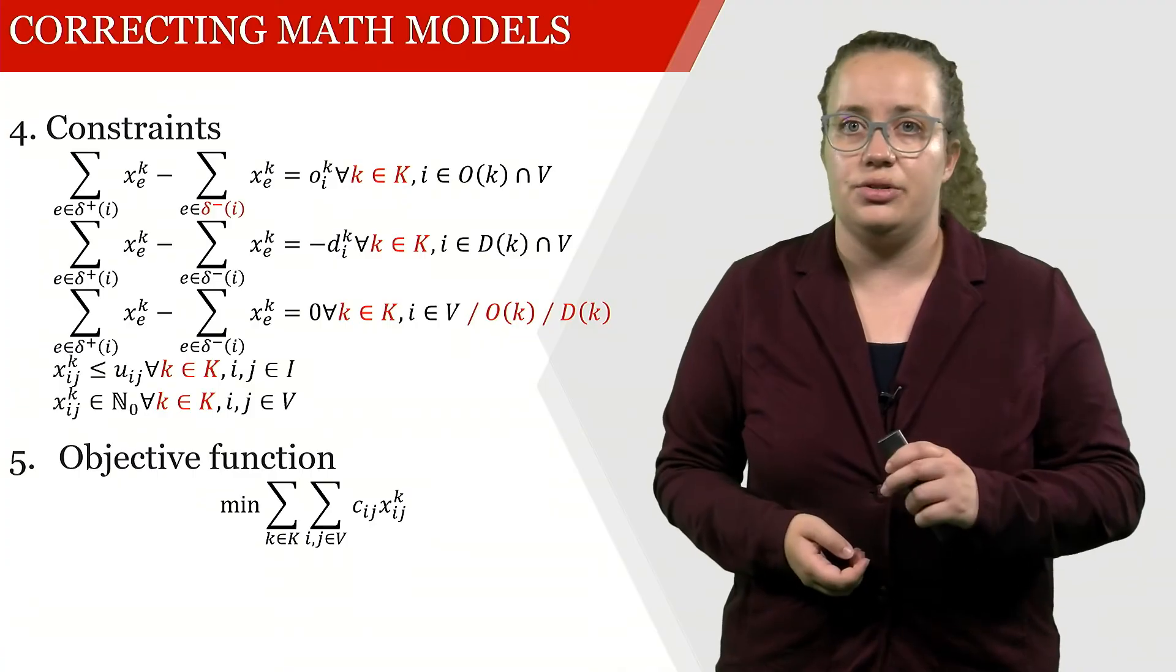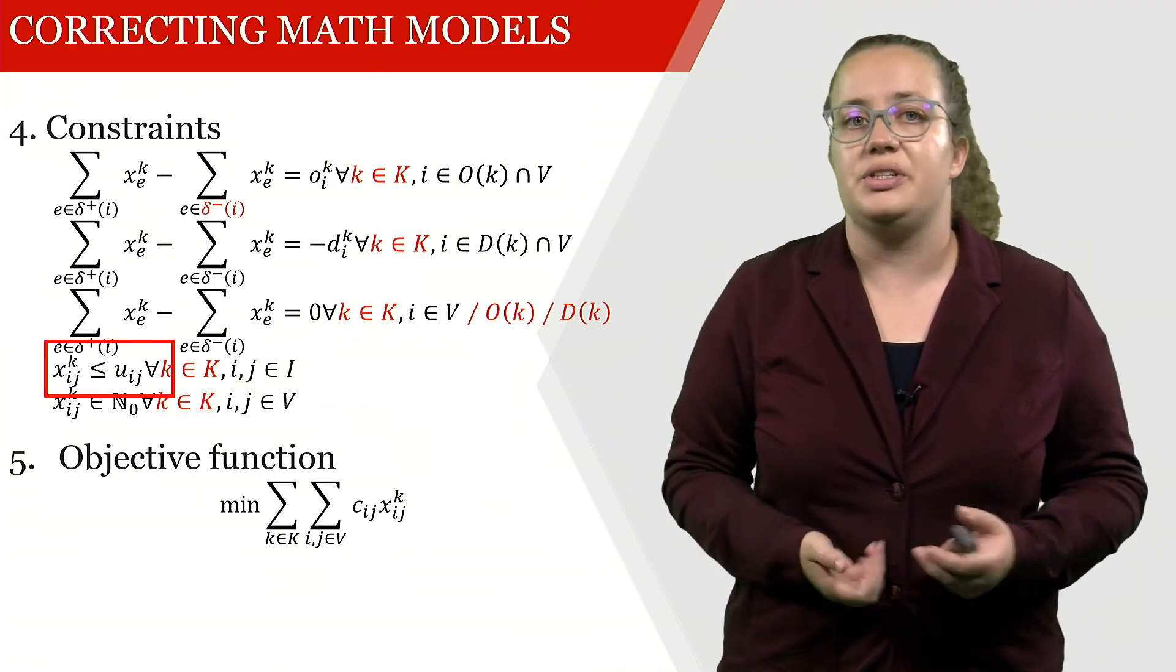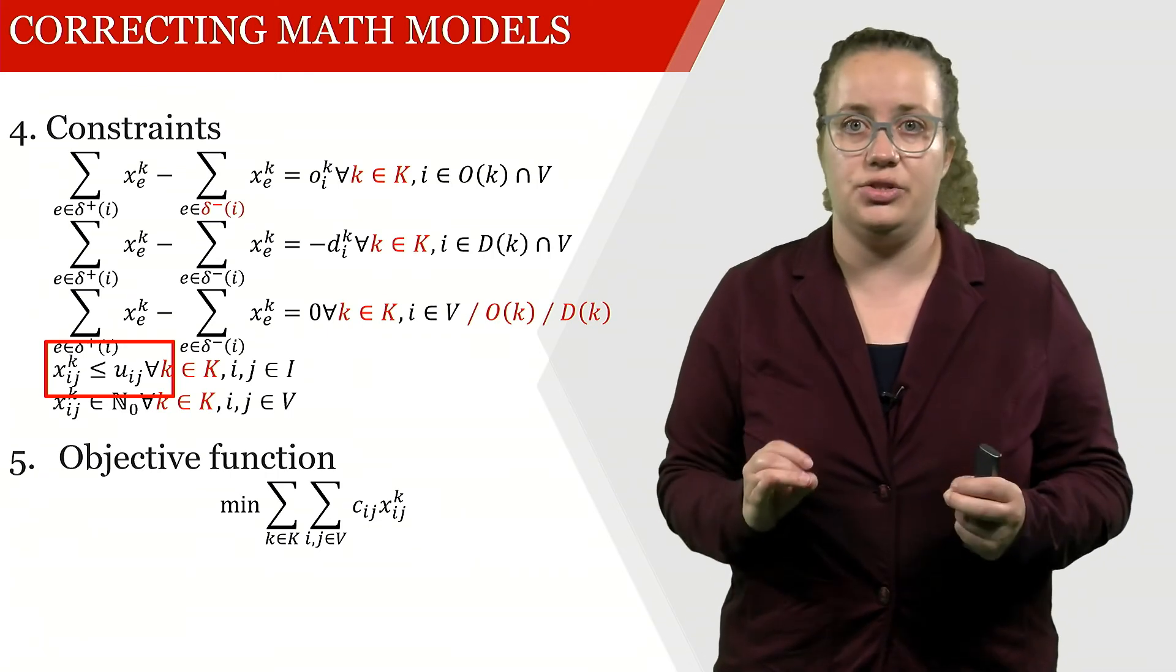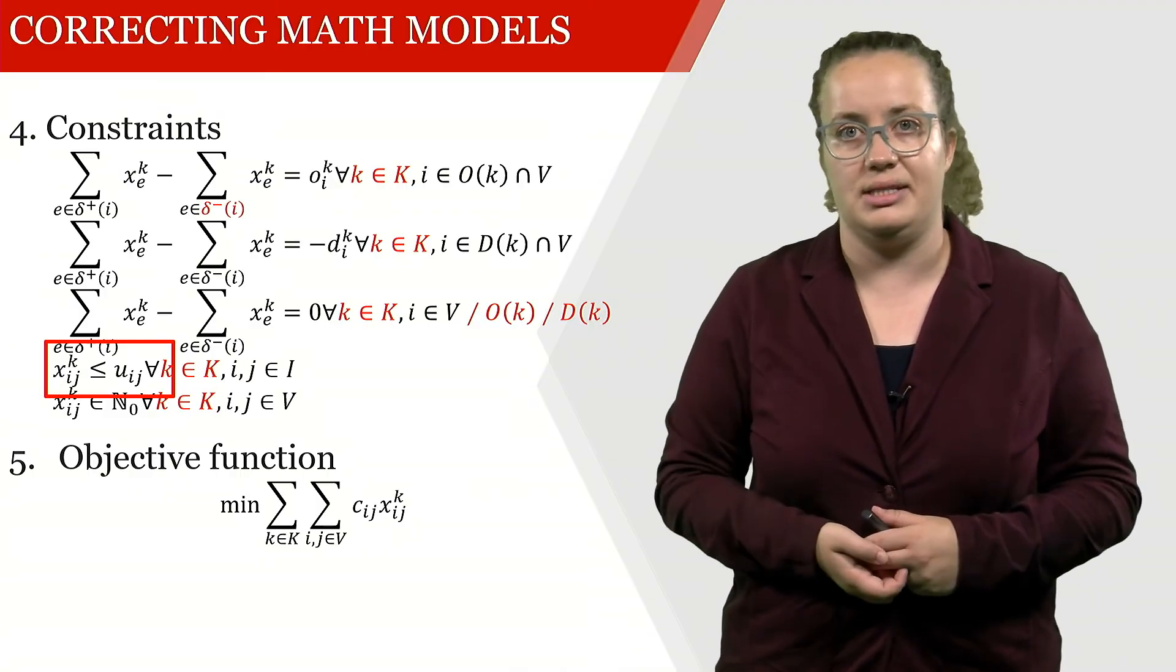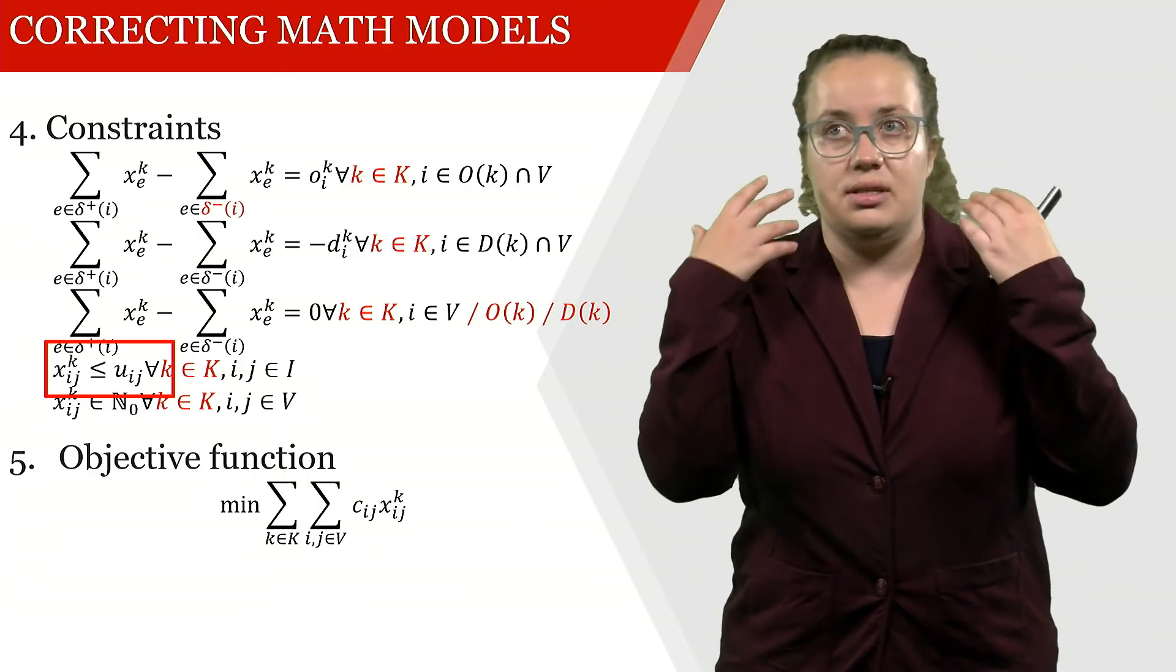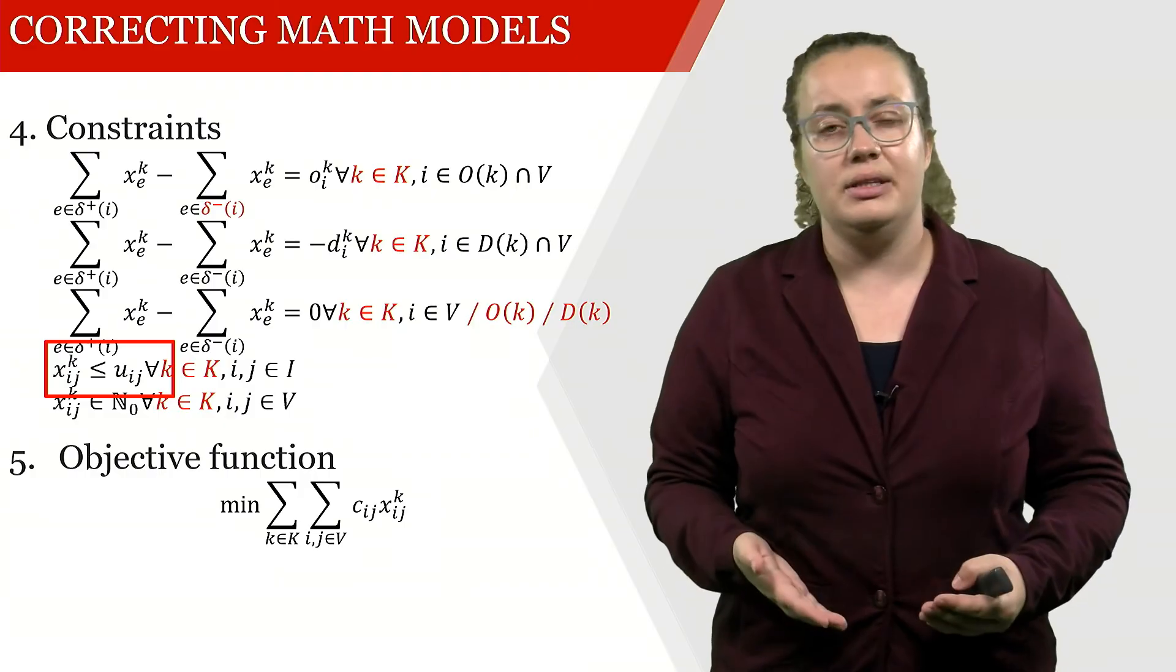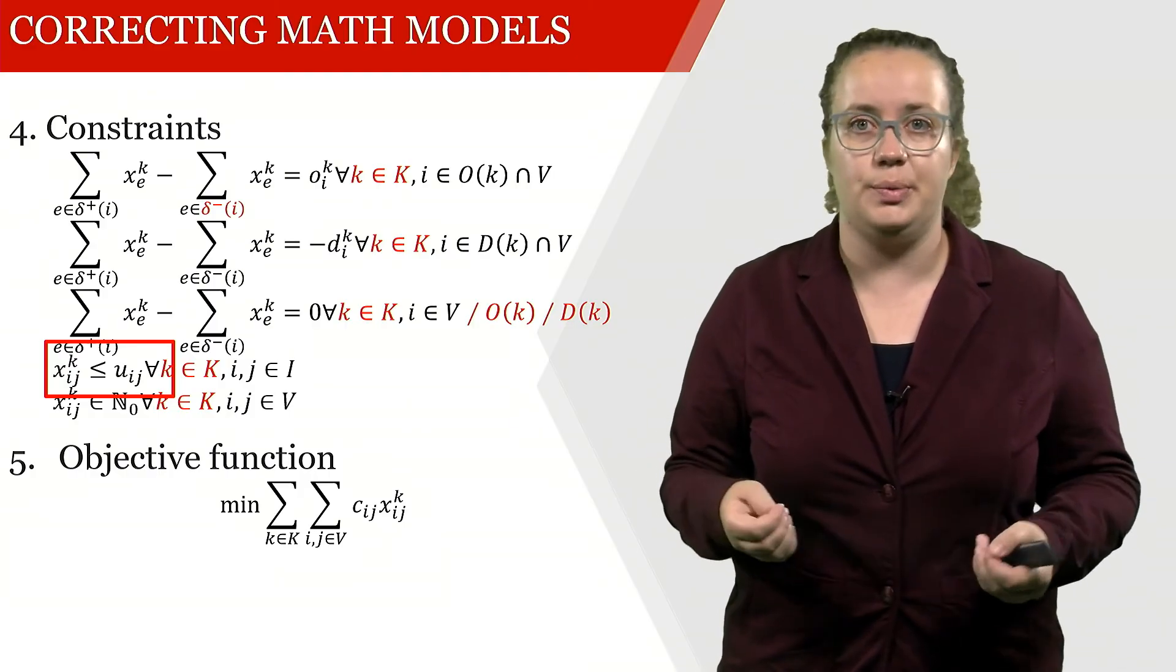Now we look into the next constraint, and if we look into this constraint here, then what we're seeing is that the number of people of a given passenger type that travel on a given arc has to be less than or equal to its capacity. If we just straightforwardly think about it, that makes sense. But now the problem is that if we were to implement this, it would be possible that...